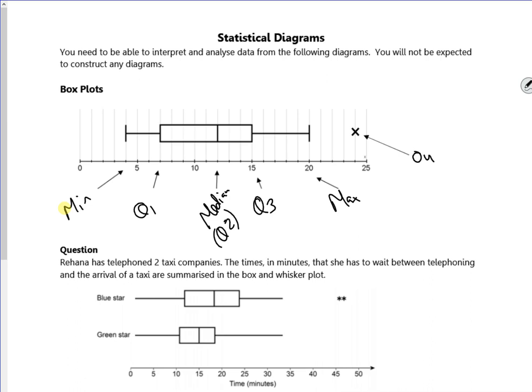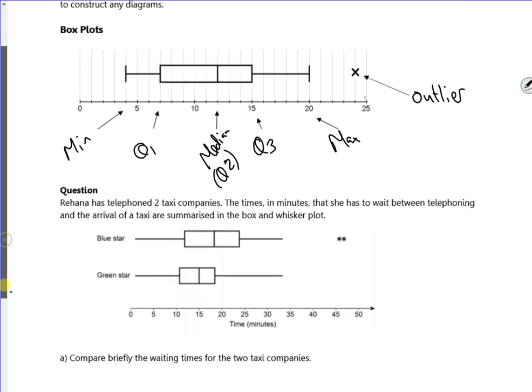This little beauty is an outlier. There. So we put outliers on as a cross. Out of the way. So we kind of ignore it from the data when we work it out. But then show it on the outside.